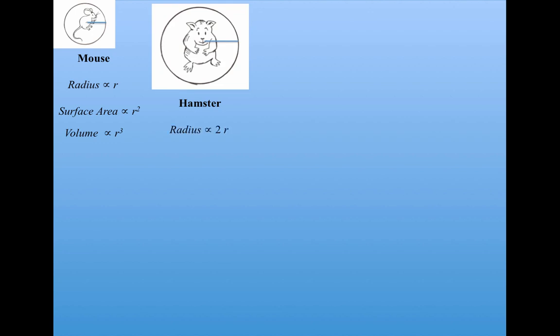Now suppose we have a hamster. Let's assume that the radius of the hamster is twice the radius of the mouse. That would mean that the surface area of the hamster, this sphere, would be proportional to the square of the radius. That is, 2r quantity squared, which is 4 times r squared, where r is the mouse's radius. And the volume would be the radius cubed, or 8 times r cubed.